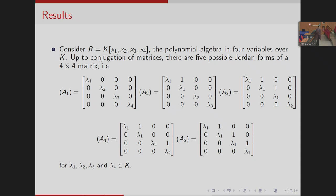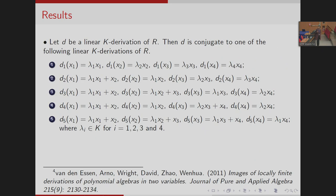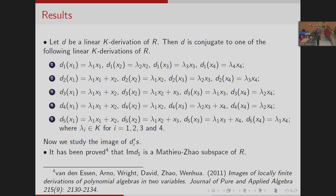Now we discuss linear k-derivations of the polynomial algebra in four variables. Up to conjugation of matrices, there are five possible Jordan forms of a 4×4 matrix. Corresponding to these, I have defined five linear k-derivations of k[x], denoted D_1 through D_5, up to conjugation. To prove that the image of any linear k-derivation forms a Mathieu-Zhao subspace, it is enough to consider only these five derivations. It has already been proved by Van der Essen and Zhao in 2011 that the image of D_1 forms a Mathieu-Zhao subspace. So we have worked on D_2, D_3, D_4, and D_5.